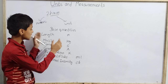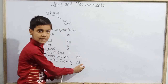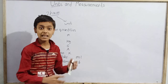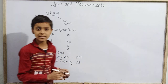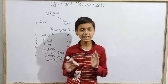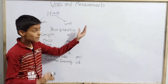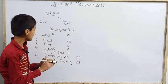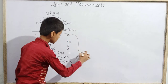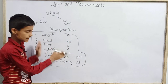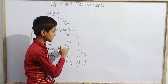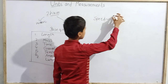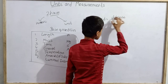In the NCERT textbook, each base unit is defined with great accuracy — what is one meter, one kilogram, one second, one ampere, one kelvin, one mole, one candela. However, from an examination point of view, those precise definitions are less critical. The 7 base units are independent of each other, while all other quantities depend on them.